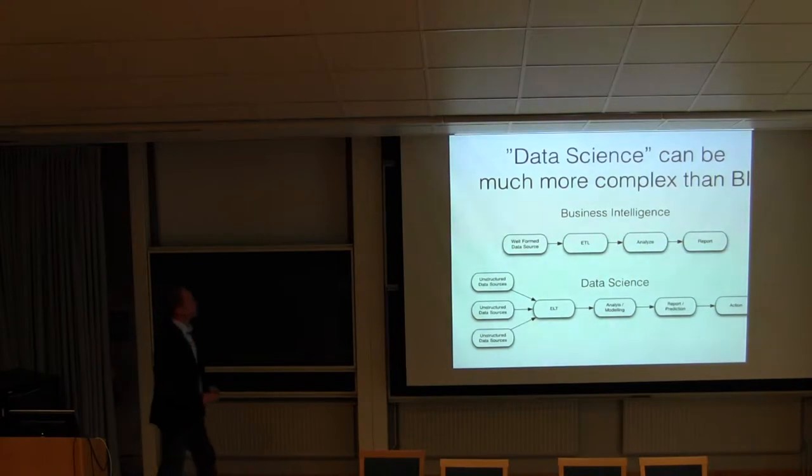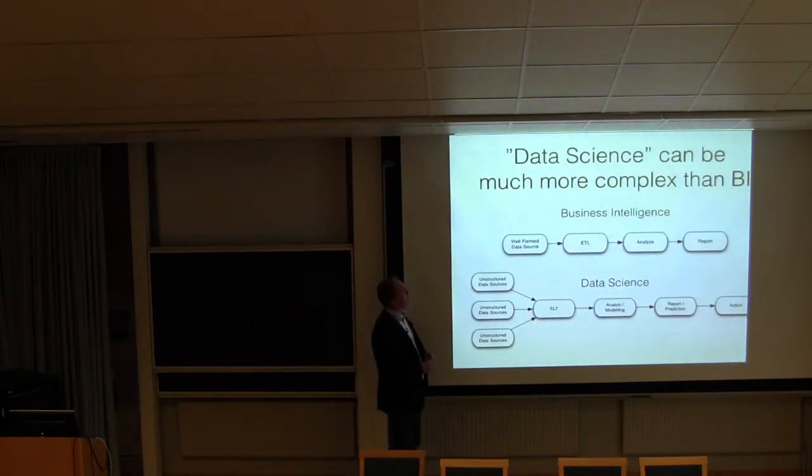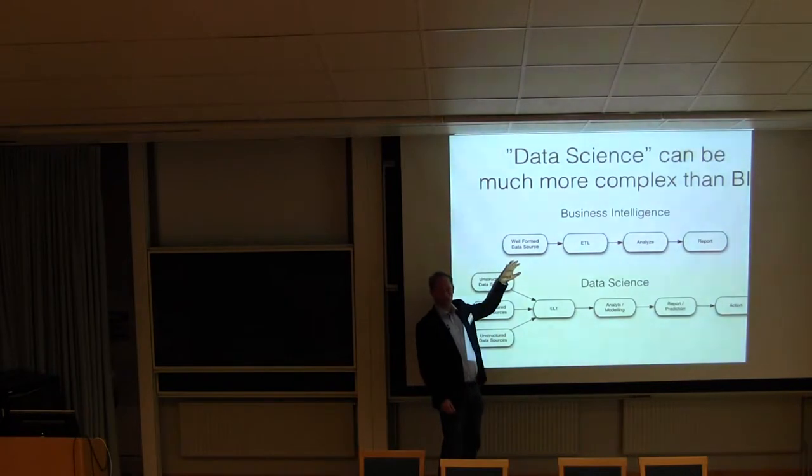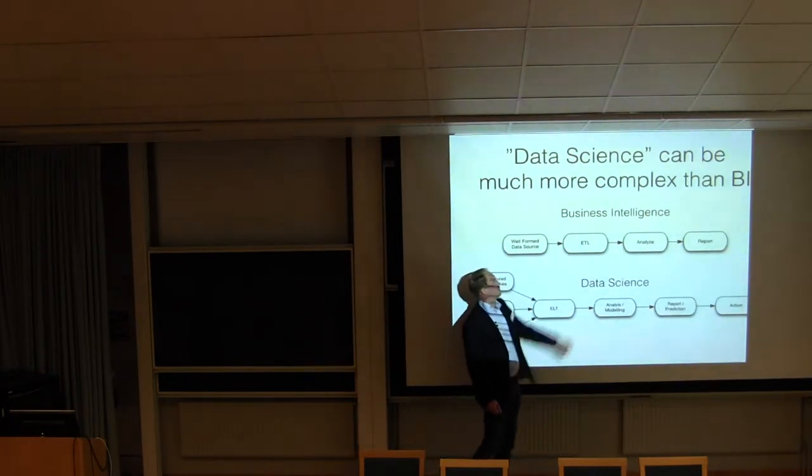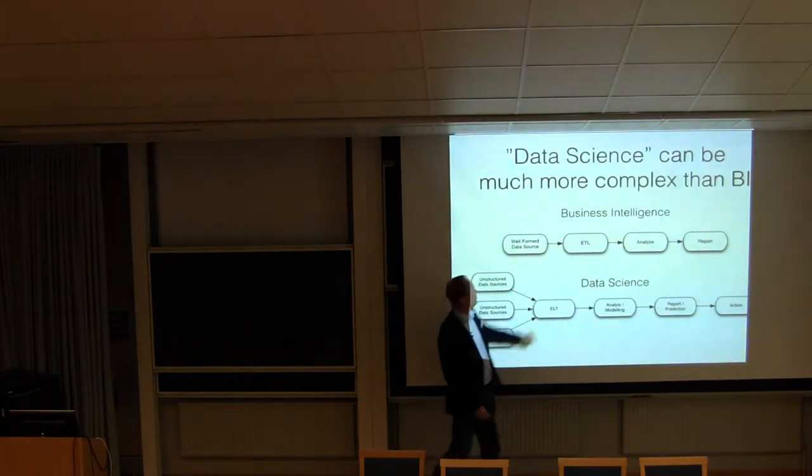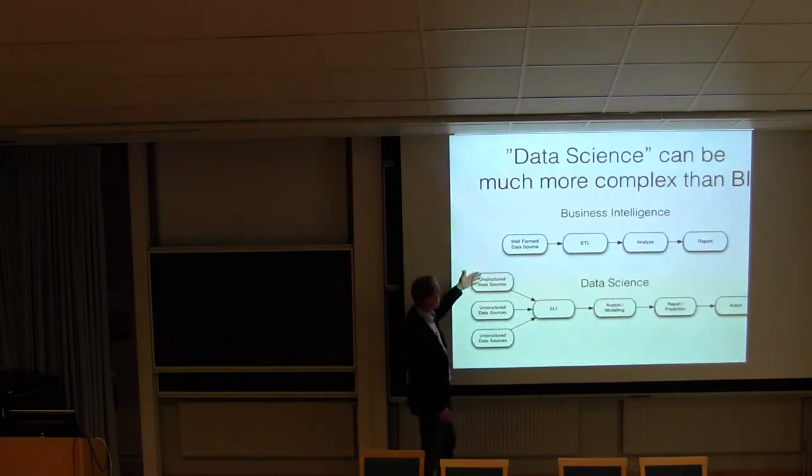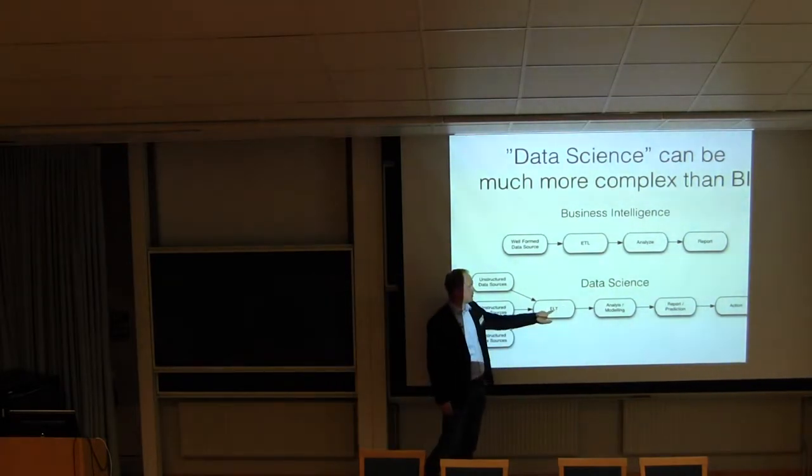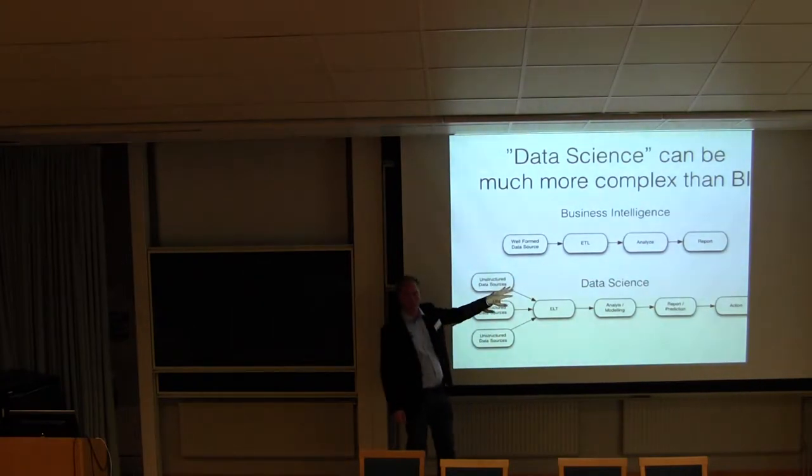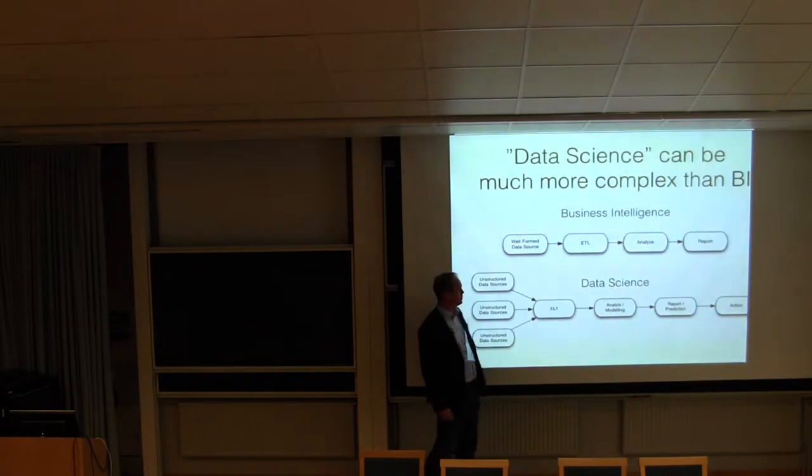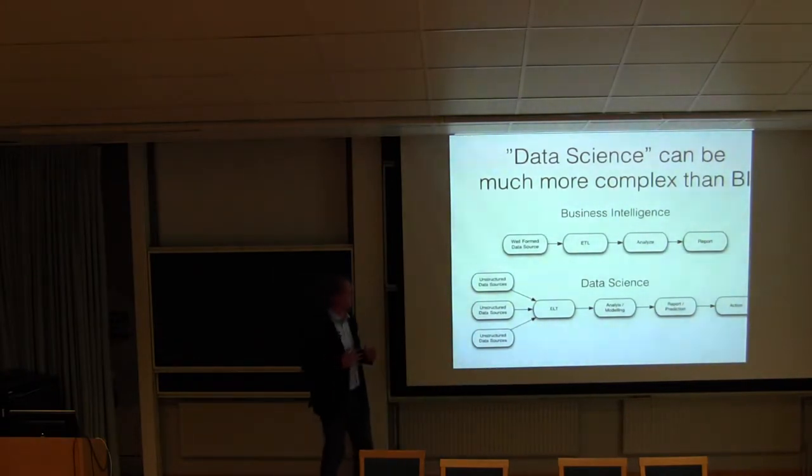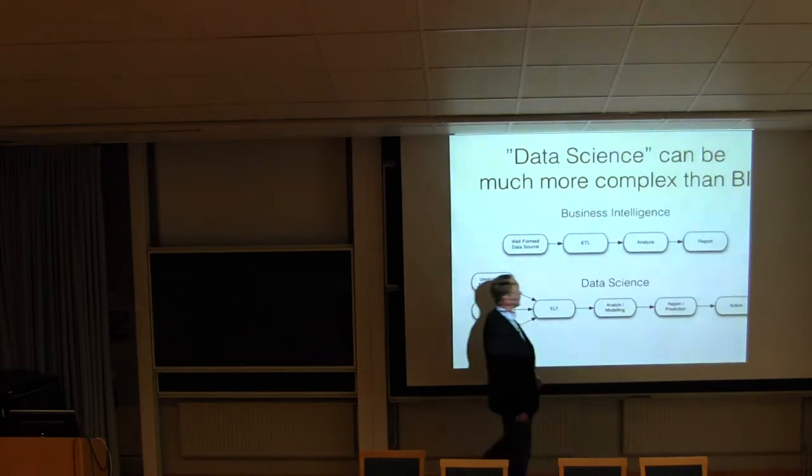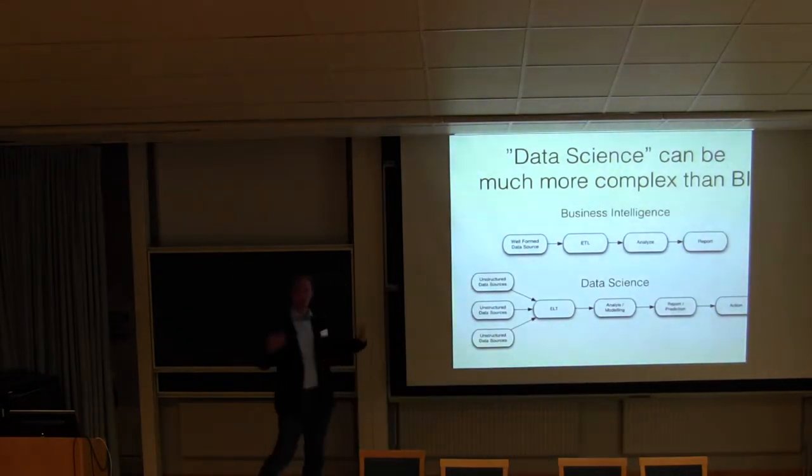So when we look at the differences between how you do data analysis between data science and business intelligence. So in business intelligence you start usually with well formed data sources. You have data warehouses and well formed databases. And you do something called extract transform load. You analyze it and report it. And you do data science. You can of course have these types of data sources. You also can have files. You can have like anything. And then we do something called extract load transform instead of extract transform load. And this means that you extract the data, load it, and then transform it when you have all the data on site. You go on. You do the analysis modeling. You report and predict. And you try to get an action out of it instead of just reporting what happened and what does the data look like.